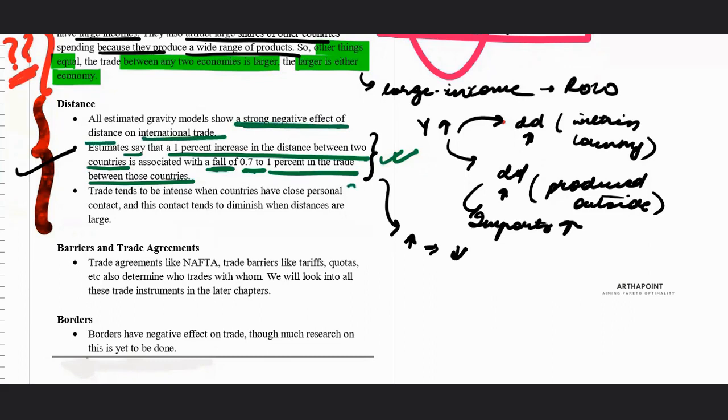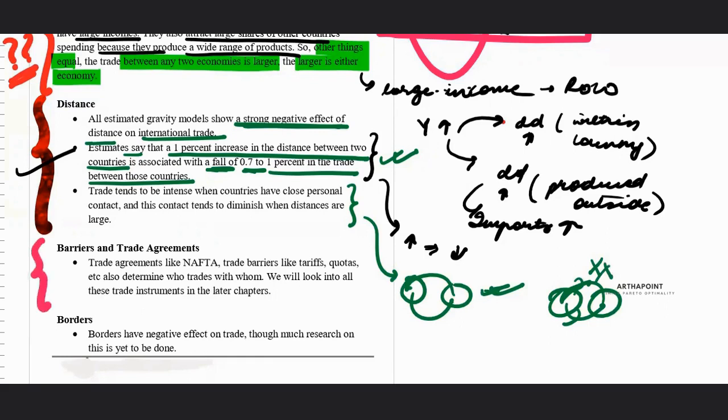Similarly, it is seen that if countries go into a contract for trade, more trade takes place. And if there is no good international relationship, then less trade takes place between those countries. We can account for that using barriers and trade agreements.